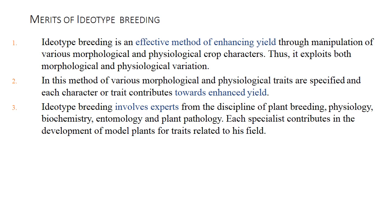The merits of idiotype breeding: it is an effective method of enhancing yield through manipulation of various morphological, physiological, and crop characters, exploiting both morphological and physiological traits. Each character or trait value is specified and contributes towards enhanced yield.